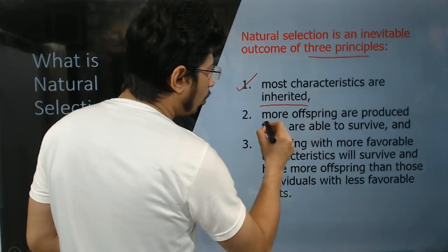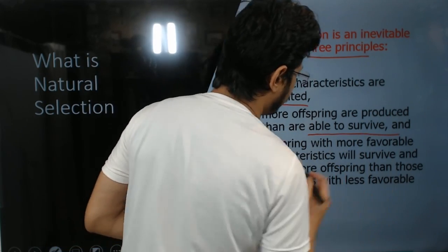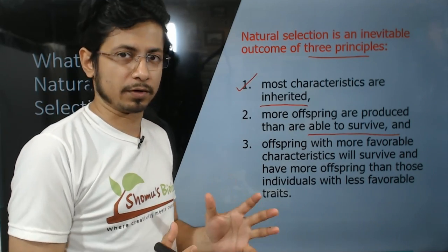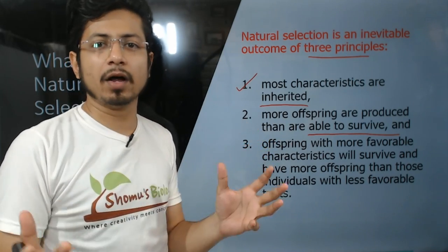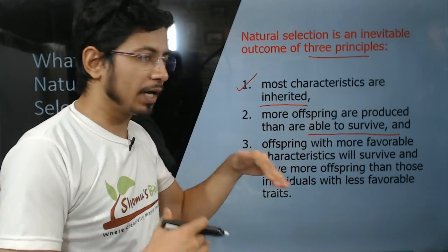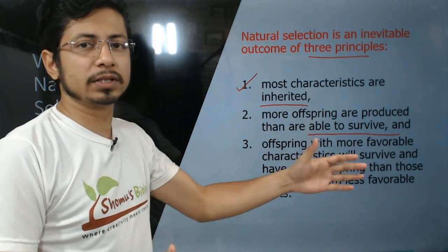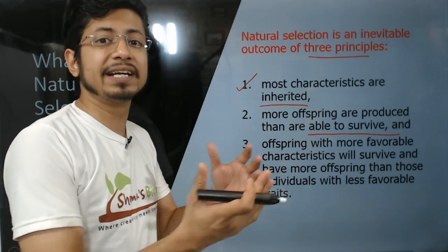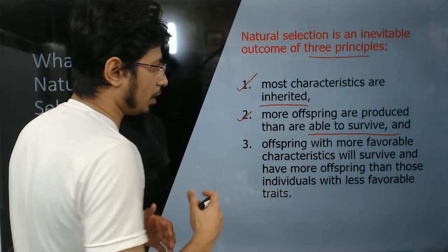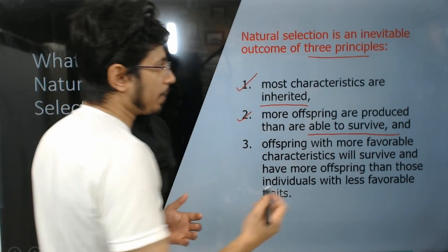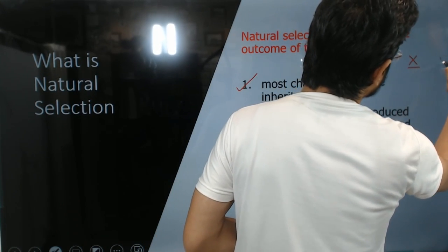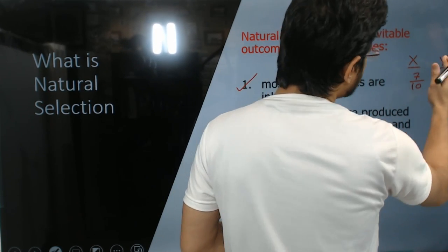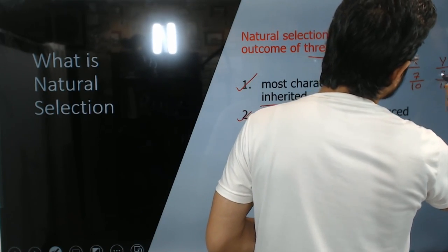Principle number two is that more offspring are produced than are able to survive. Every single organism produces more offspring than they actually need. For example, out of 10 offspring, 5 will survive in some organisms, 2 in others, 8 in others. Take organism X and organism Y — organism X produces 10 offspring and 7 out of 10 can survive, while organism Y produces 10 offspring but only 3 out of 10 can survive.